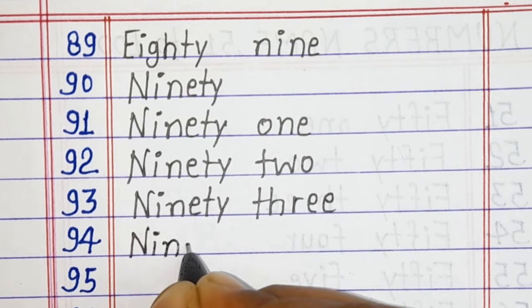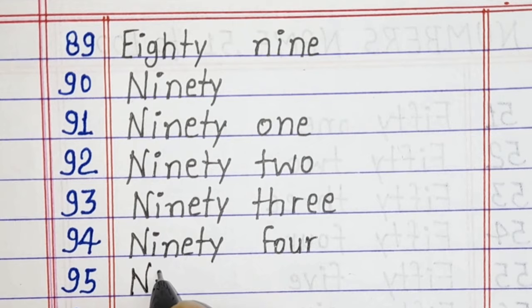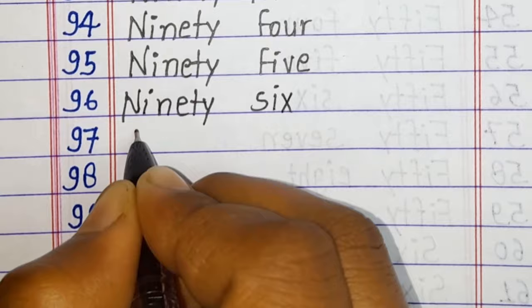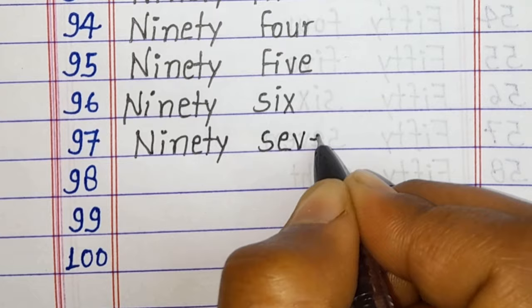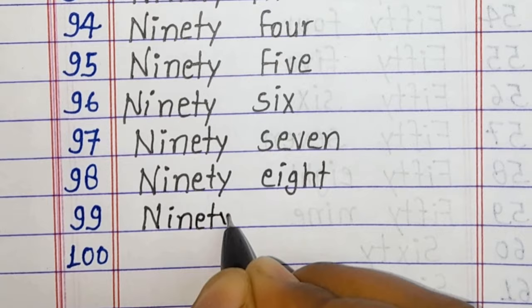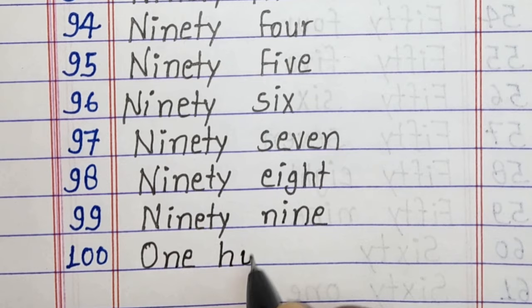Eighty-one, 81. Eighty-two, 82. Eighty-three, 83. Eighty-four, 84. Eighty-five, 85. Eighty-six, 86. Eighty-seven, 87. Eighty-eight, 88. Eighty-nine, 89. Ninety, 90. Ninety-one, 91. Ninety-two, 92. Ninety-three, 93. Ninety-four, 94. Ninety-five, 95. Ninety-six, 96. Ninety-seven, 97. Ninety-eight, 98. Ninety-nine, 99. One hundred, 100.